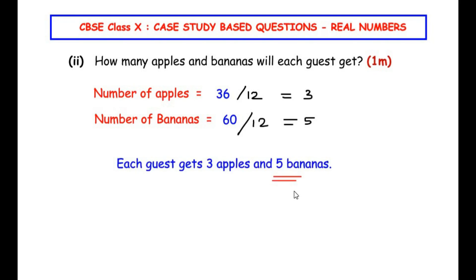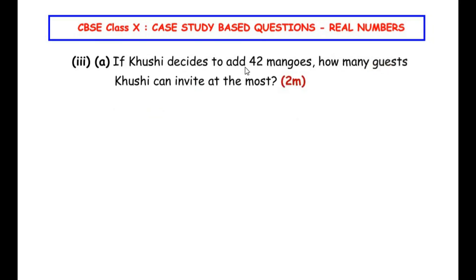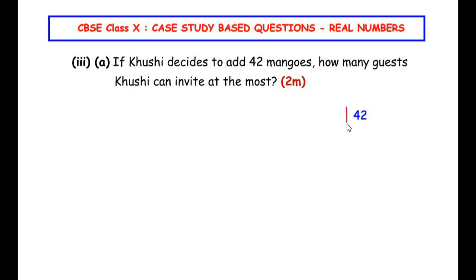Now the third sub question: if Khushi adds 42 mangoes, how many guests can she invite at the most? We already have the factors of 36 and 60. Now let us prime factorize 42. 7 times 6 is 42. 2 times 3 is 6, and 3 times 1 is 3. So the prime factors of 42 are 2, 3, and 7.